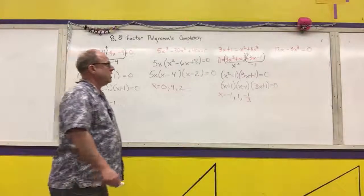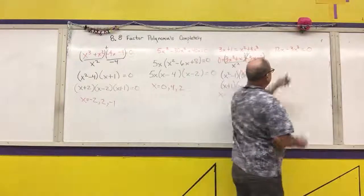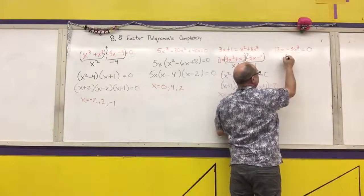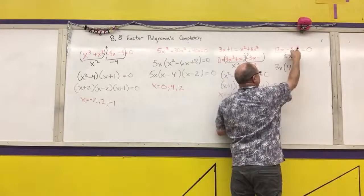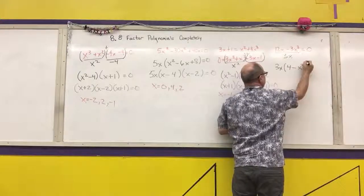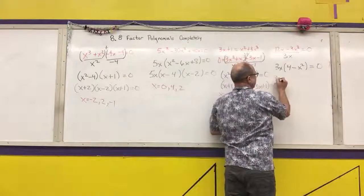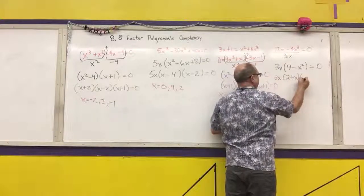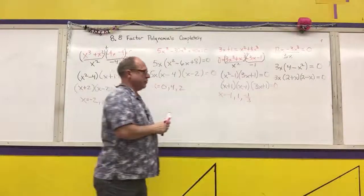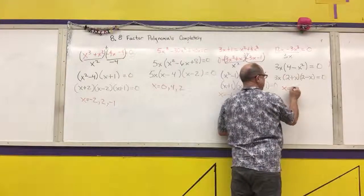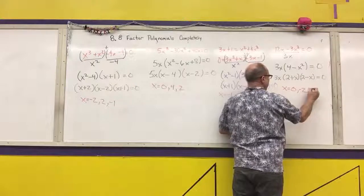The last problem is 12x minus 3x cubed equals 0. I recognize a common factor: I can pull a 3 and an x out of both terms, giving 3x times (4 minus x squared) equals 0. This still factors as a difference of squares: 3x times (2 plus x) times (2 minus x). Setting each factor equal to 0: 3x equals 0 gives x equals 0; 2 plus x equals 0 gives x equals negative 2; 2 minus x equals 0 gives x equals positive 2.